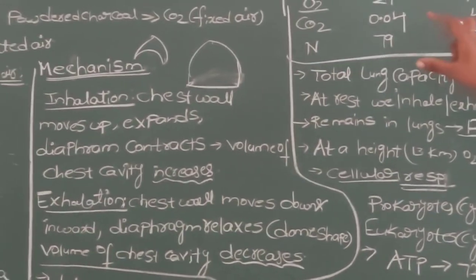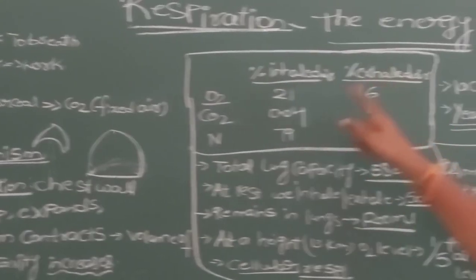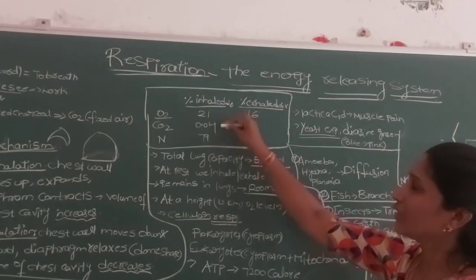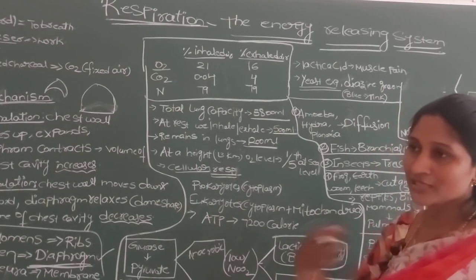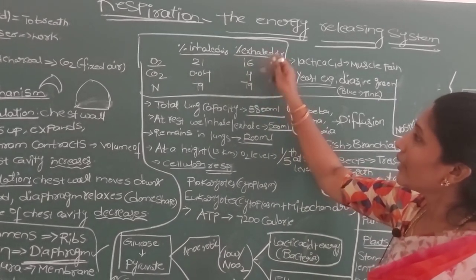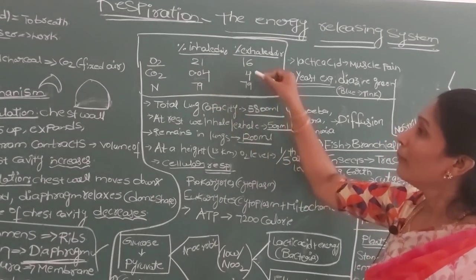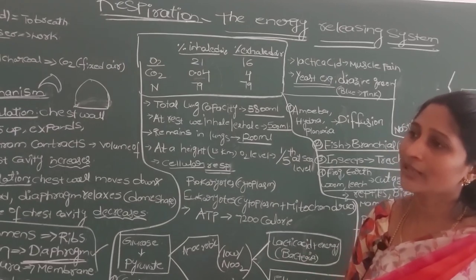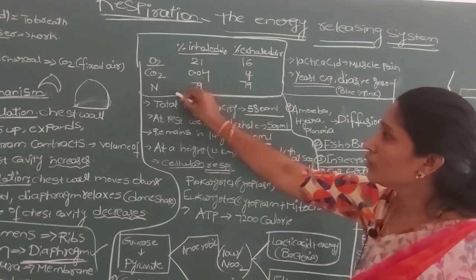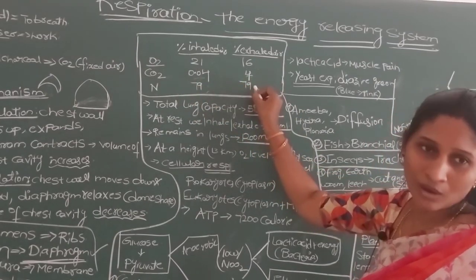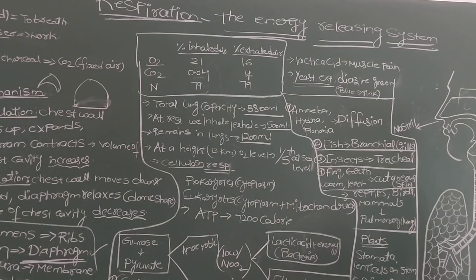The percentage of gases in inhaled air vs. exhaled air: Oxygen is 21% in inhaled air but only 16% in exhaled air (cells use most of the oxygen). CO2 is 0.04% in inhaled air but rises in exhaled air due to cellular respiration continuously producing CO2. Nitrogen is not utilized by cells, so it remains constant in both inhaled and exhaled air.